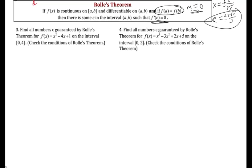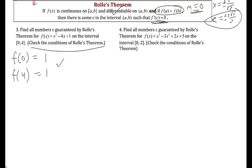Find all numbers c guaranteed by Rolle's theorem for f(x) = x² - 4x + 1 on [0, 4]. This is a polynomial so it's differentiable and continuous — conditions are met. Checking f(0) = 1 and f(4) = 1, those are equal, so the overall slope between a and b is 0. Somewhere in between, there must be at least one x value where the slope is also 0.